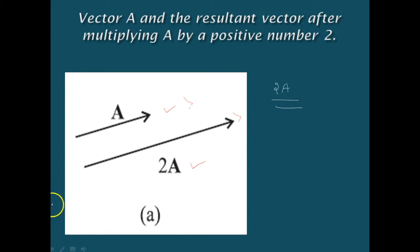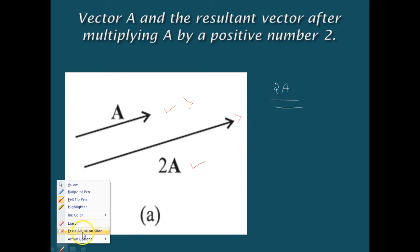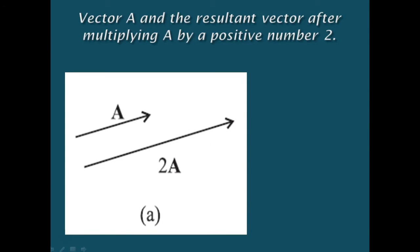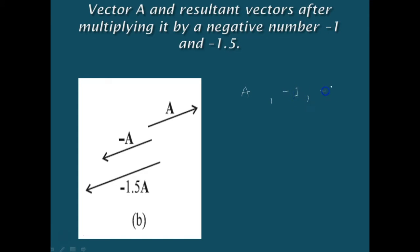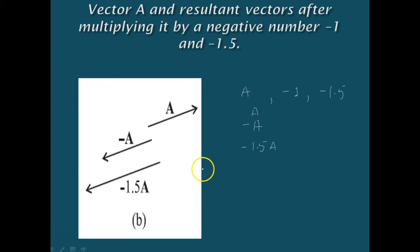If we multiply a given vector with a negative number, what happens? Let us take two examples: minus 1 and minus 1.5. When we multiply by minus 1, the first vector we get is minus A. When we multiply by minus 1.5, we get minus 1.5A. So if you multiply a vector with a negative number, there is a change in direction along with the magnitude.